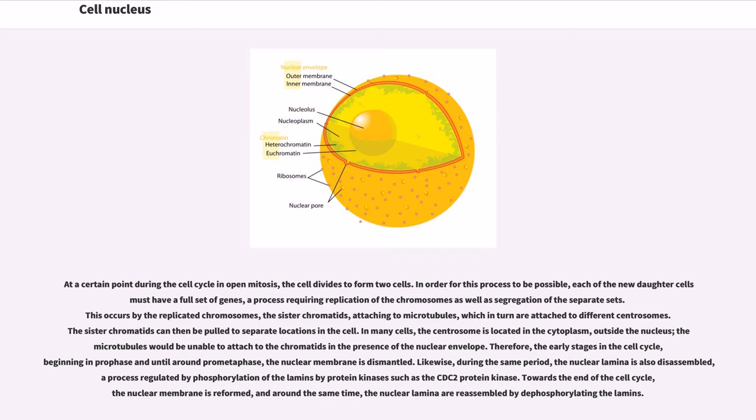At a certain point during the cell cycle in open mitosis, the cell divides to form two cells. In order for this process to be possible, each of the new daughter cells must have a full set of genes, a process requiring replication of the chromosomes as well as segregation of the separate sets. This occurs by the replicated chromosomes, the sister chromatids, attaching to microtubules, which in turn are attached to different centrosomes. The sister chromatids can then be pulled to separate locations in the cell. In many cells, the centrosome is located in the cytoplasm, outside the nucleus. The microtubules would be unable to attach to the chromatids in the presence of the nuclear envelope. Therefore, the early stages in the cell cycle, beginning in prophase and until around prometaphase, the nuclear membrane is dismantled. Likewise, during the same period, the nuclear lamina is also disassembled, a process regulated by phosphorylation of the lamins by protein kinases such as the CDC2 protein kinase. Towards the end of the cell cycle, the nuclear membrane is reformed, and around the same time, the nuclear lamina are reassembled by dephosphorylating the lamins.